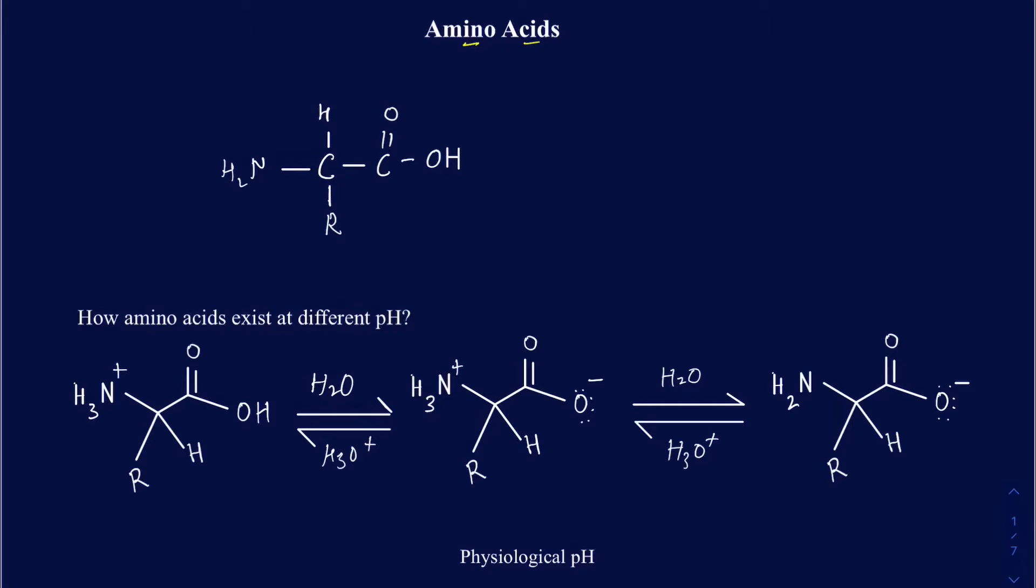So on this general structure here, I have the COOH, which is obviously going to be your carboxylic acid. And then on the left side, you've got this NH2, which is going to be called an amine group. So that's why they're amino acids. Obviously, the carboxylic acid is going to be acidic. The amines are basic.